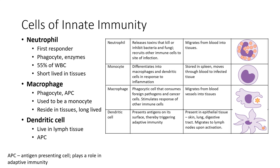Dendritic cells are cells that live in our lymph tissue. They're like little sentinels that can constantly check the environment and present antigens on their surface to see if we need to make an immune response to something — like a little toddler that keeps picking things up and saying 'look at this.' But they play a key role in triggering our adaptive immune response. You can find dendritic cells in our epithelial tissues such as the skin, our lungs, and our digestive tract. Once they get activated, they move to the lymph nodes where they can start communicating with our T cells and B cells of the adaptive immune system.